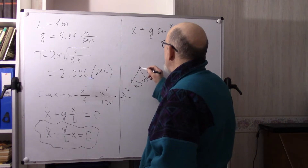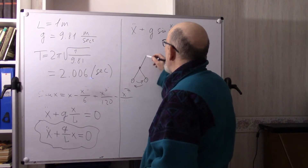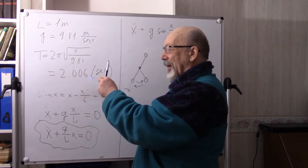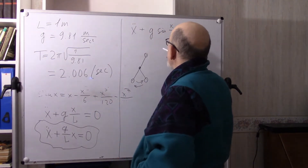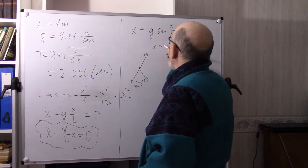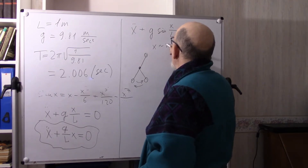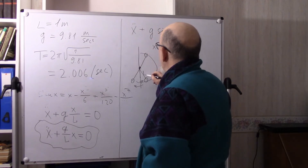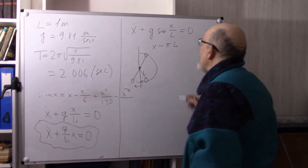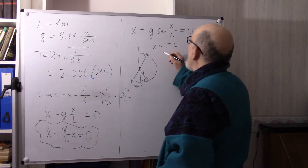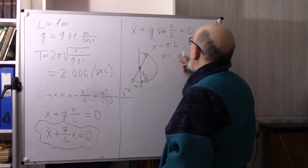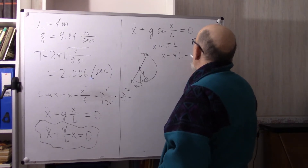Let us consider the pendulum near the upright position. We can raise a pen upright as an example. In this case, X is close to pi times L — the arc length is close to pi times L. So we write X equals pi times L plus Y, meaning Y equals X minus pi times L.